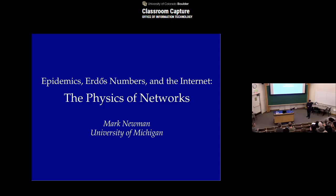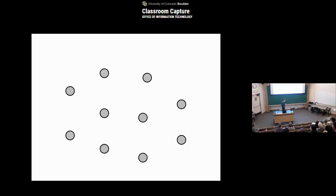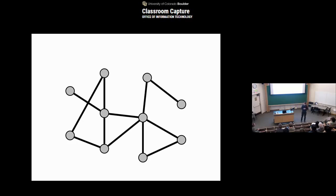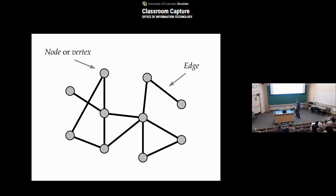Since this is a bit out of the mainstream of physics, I'm not going to assume that you're experts in this area. So let's start at the beginning: what is a network? For the purpose of this talk, a network just means a bunch of dots joined together by lines in some way. In the jargon of the field, a dot is called a node or a vertex, a line is called an edge, and I will use that jargon — nodes and edges — throughout this talk. We're interested in networks as a compact mathematical representation of the structure of all sorts of complex systems that we care about in science and human society.